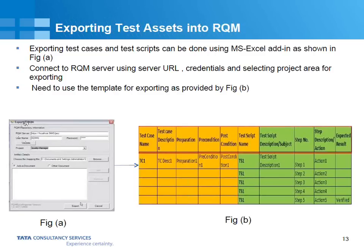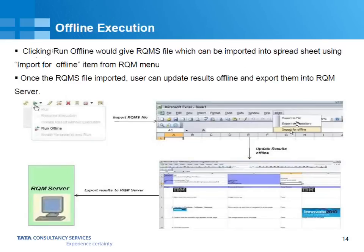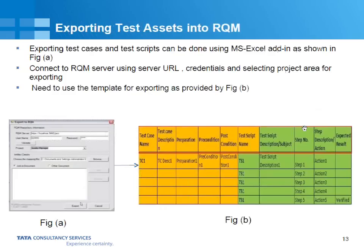This is a sample menu that gets opened. There is an RQM menu here. Once you install the plugin, the RQM menu appears, and when you say 'export to repository,' a pop-up opens where you have to authenticate the RQM server.